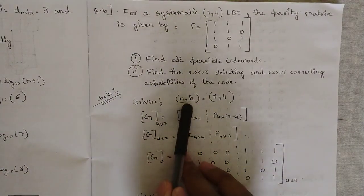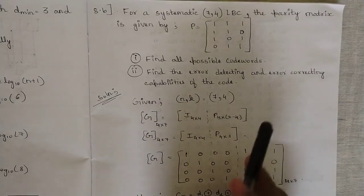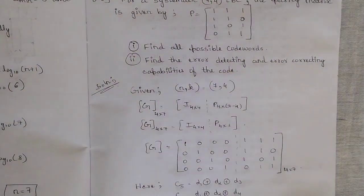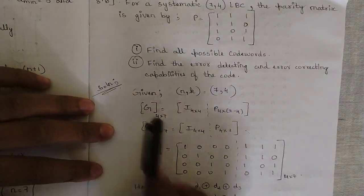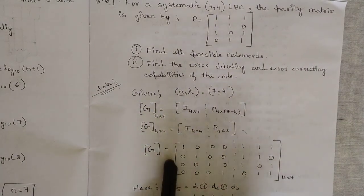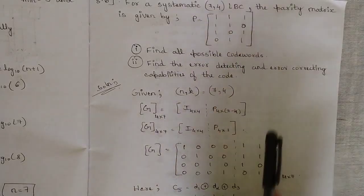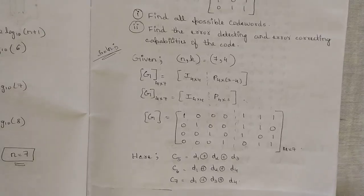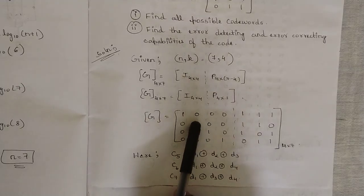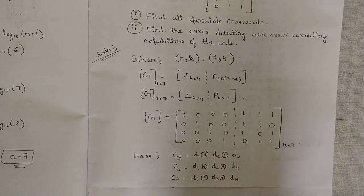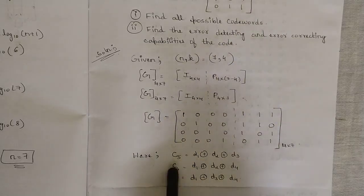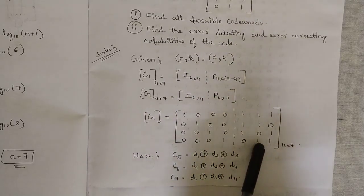Given n comma k = 7 comma 4. To find all possible code words, we use the generator matrix G = [I | P], with the 4×4 identity matrix and the given parity matrix. From the generator matrix, since c1=d1, c2=d2, c3=d3, c4=d4, the check bit equations are: c5 = d1+d2+d3, c6 = d1+d2+d4, c7 = d1+d3+d4.